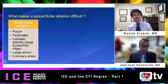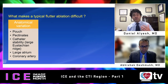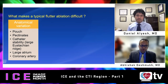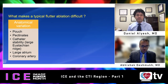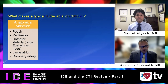Can you comment on how ICE helps you work with anatomic variation in the CTI region, and whether you use ICE for all of your CTI flutters? The majority of CTI flutters nowadays are done after an AF ablation during which we use intracardiac echo. As we're doing more and more AF ablations, we are using more ICE, and that's why the majority of CTI flutters are done with ICE. That said, I still use ICE for predominantly all my pure CTI flutters.